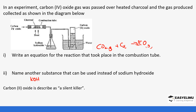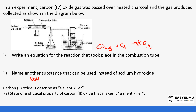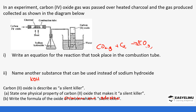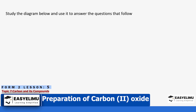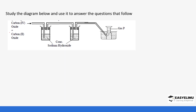Question: Carbon monoxide is described as a silent killer. State one physical property of carbon monoxide that makes it a silent killer. Answer: It is colorless and odorless. Question: Write the formula of the oxide which is a silent killer. Answer: The formula is CO. Study the diagram below and use it to answer the questions that follow: carbon dioxide and carbon monoxide are passed through concentrated hydroxide solution, and then gas P is collected.